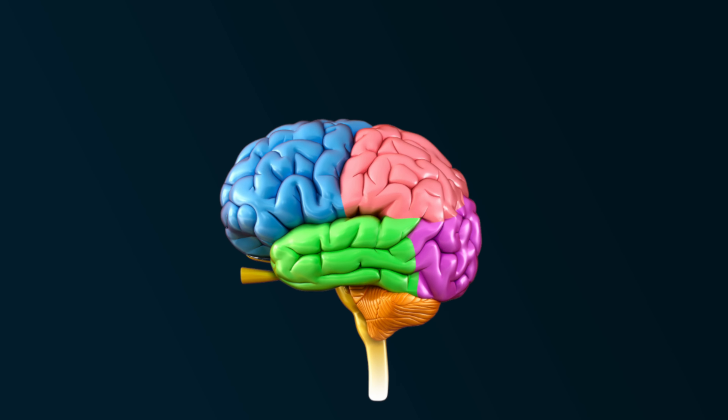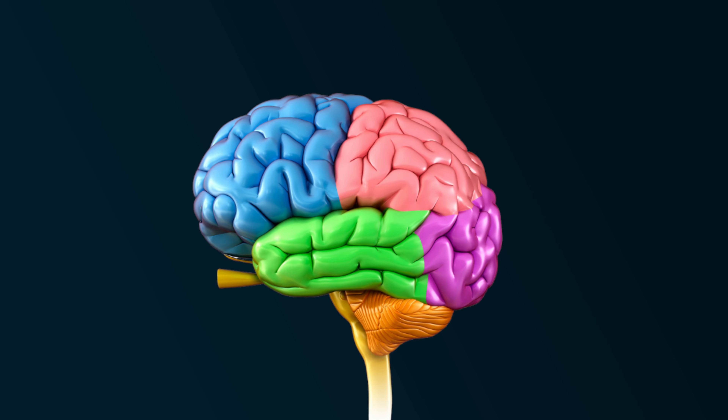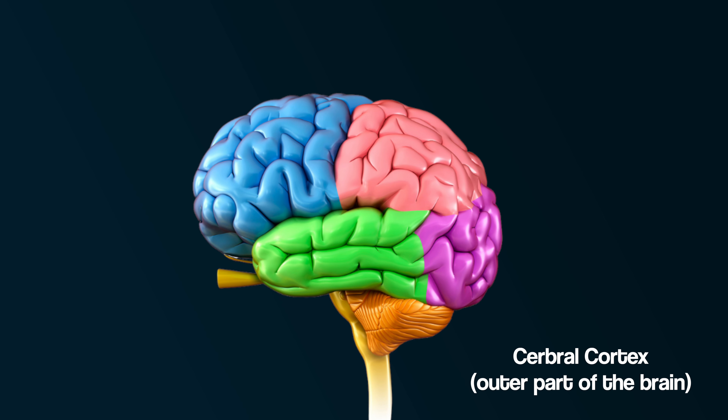This would mean that if a particular part of the brain became damaged because of injury or illness, then the function associated with that area of the brain would also be affected. The outer part of the brain is known as the cerebral cortex and contains four lobes.